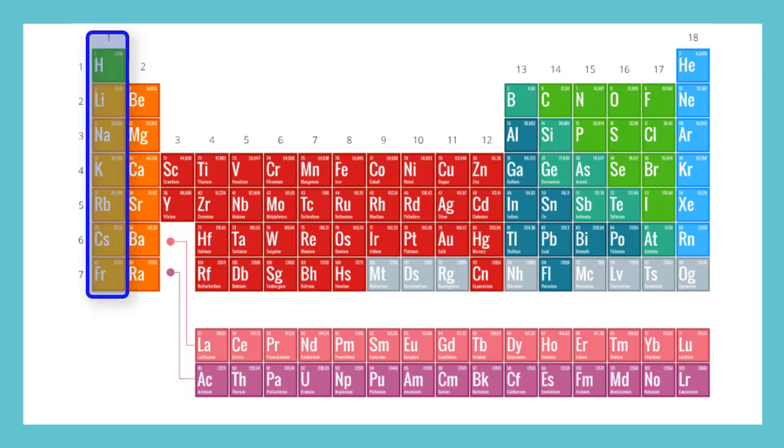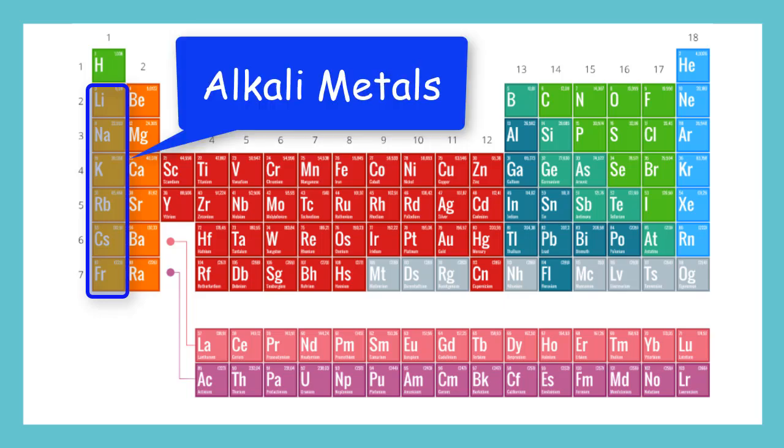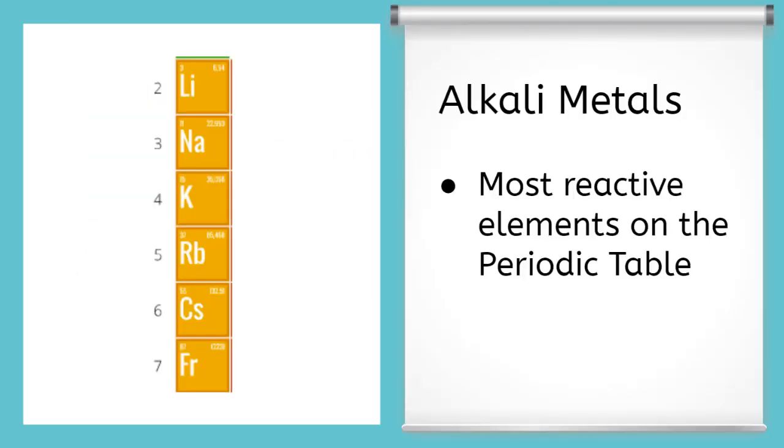way over here on the left side. But only the yellow boxes, period 2 through 7. These are called the alkali metals. This group is the most reactive group of elements on the table. They react a lot when they come in contact with water. Some of the elements can even explode.